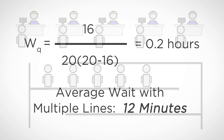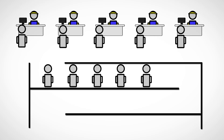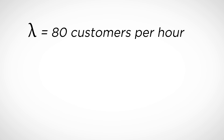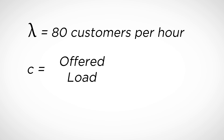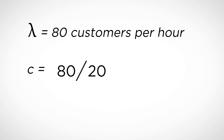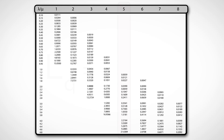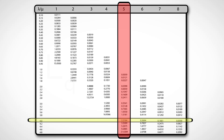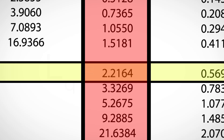On the other hand, consider the case in which we have five cashiers grouped together. In this case, the arrival rate to the pool of cashiers is 80, and we first calculate the offered load of the system. The offered load equals the arrival rate divided by the service rate. The service rate of each cashier is 20 customers per hour, so the offered load is four. In other words, the minimum number of cashiers David Craig needs to hire to ensure all customers are served is four. David Craig has hired five cashiers, and so using the table for the MMSQ, we find LQ — the average number of customers waiting — is 2.2164.